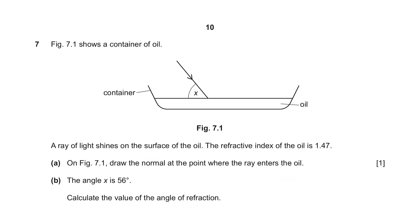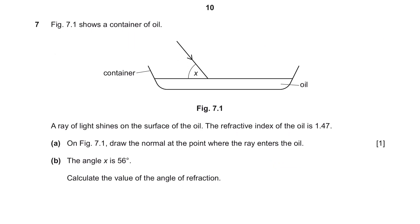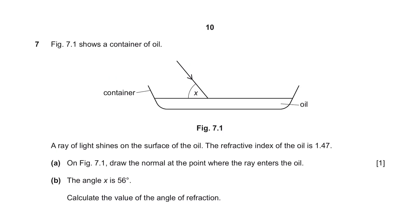Question 7. Figure 7.1 shows a container of oil. A ray of light shines on the surface of the oil. The refractive index of the oil is 1.47. Question A: On figure 7.1, draw the normal at the point where the ray enters the oil. Since this is your boundary, you should draw a normal perpendicular to your boundary at a 90 degree angle. So this is what your normal should look like.